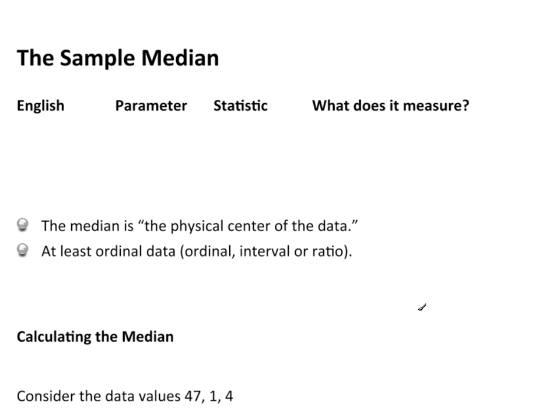We talked about the idea of finding the sample mean, one of the measurements of location, and now I want to talk about finding the sample median, another measurement of location. In English, we say it's the median. The parameter is your Greek letter theta, which is a circle with a horizontal line through it. The statistic is M, and it measures the physical center of a population or a data set.